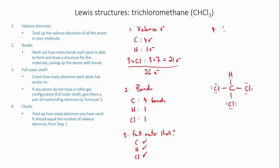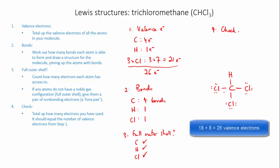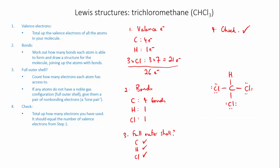The final step is to check the totals. I started with 26 valence electrons, so I want 26 in my structure. Counting: 18 non-bonding electrons from all the lone pairs, plus eight electrons from the four bonds — 18 plus 8 equals 26. I have the same number of electrons in the structure as I started with. That's the correct structure for trichloromethane.